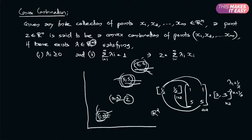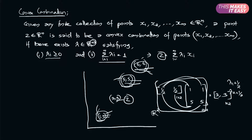Such that all lambda_i are greater than or equal to 0, and the summation of all lambdas is equal to 1, such that z equals the summation of lambda_i times x_i. That is what we have written in matrix form here.